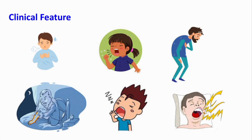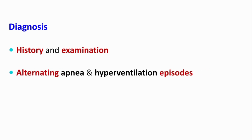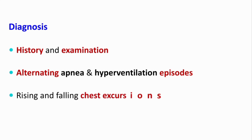Diagnosis can be made on the basis of history and examination. Alternating apnea and hyperventilation episodes can be observed during sleep and even in the awake state. Hyperventilation can be documented by rising and falling chest excursions and by tidal volume. The apnea and hyperpnea cycle duration is typically 45 to 75 minutes.